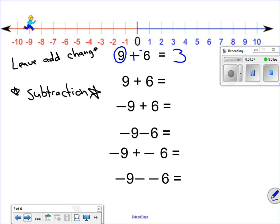Since this isn't subtraction, I can just add 9 plus 6 is 15. Negative 9 plus 6, since it's adding, we don't have to do leave, add, change, so keep that in mind. Negative 6 and 6 would give me a negative 3, because my bigger number is a negative, so my answer has to be in the negative.